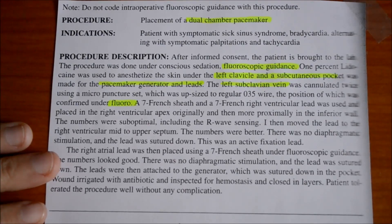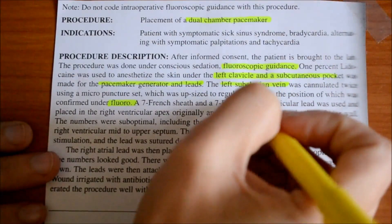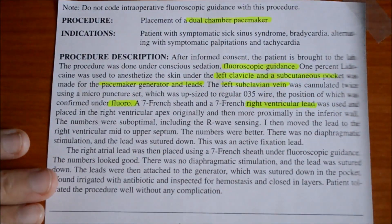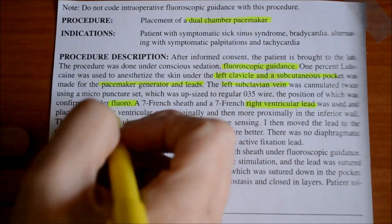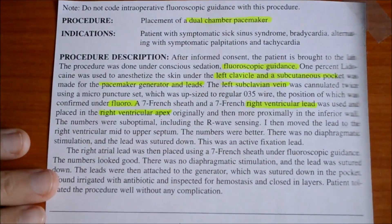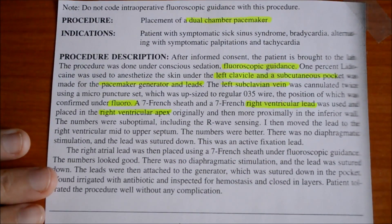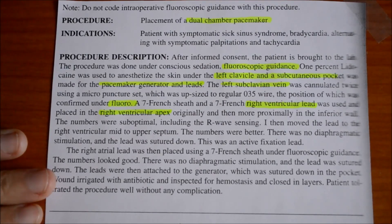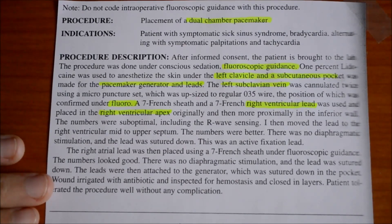A 7 French sheath and a 7 French right ventricular lead — this is giving us a clue as to where they're going — was used and placed in the right ventricular apex. So this is where they are bringing the leads to place them on the right ventricular apex, originally and then more proximally in the inferior wall. They moved from the apex of the right ventricle to the inferior wall, but they stayed within the ventricle, which PCS defines as its own separate body part character. The numbers were suboptimal, including the R-wave sensing. I then moved the lead to the right ventricle mid to upper septum — again, they're moving it but staying within the right ventricle.